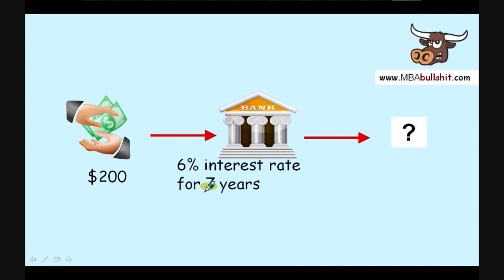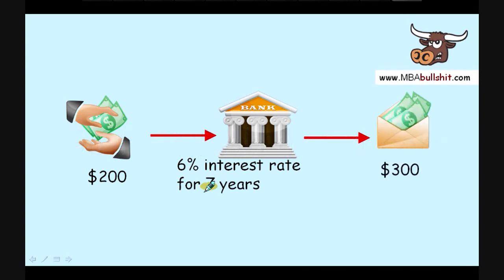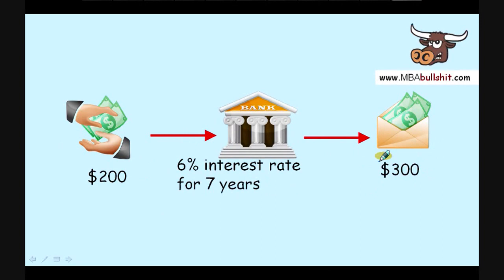The question now is: how much will you have after these seven years? The answer is you will have $300. If you put $200 in a bank for seven years at 6% interest, you will have $300 after that seven years.